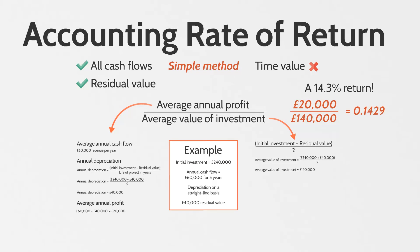As you can see, the accounting rate of return is quite simple to calculate, not using any discount factors or any grossing up as used in the modified rate of return. It's very straightforward, with very clear results — we know that for every pound we invest, we will see a 14.3% return. But the problem is that it doesn't take into account the time value of money, which really does leave it wanting in regard to its use as an investment appraisal technique.